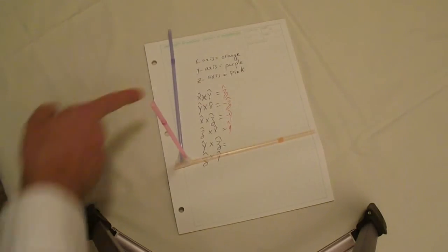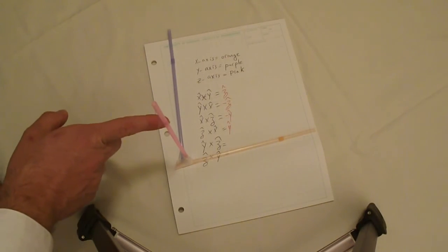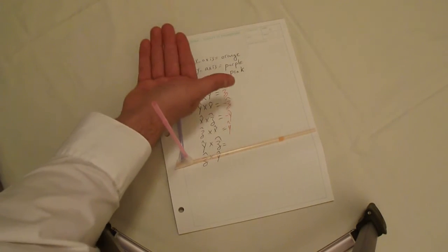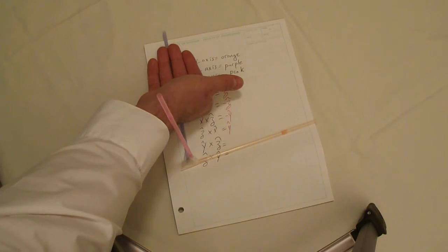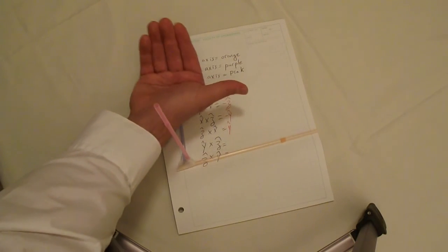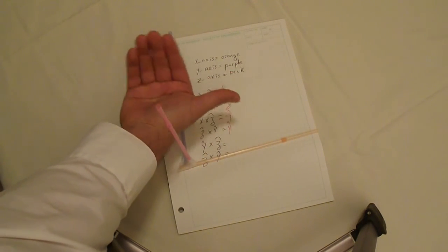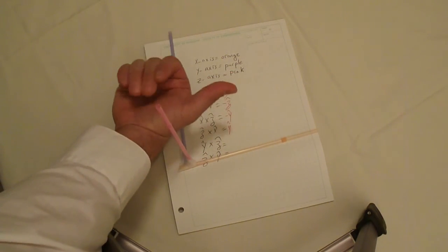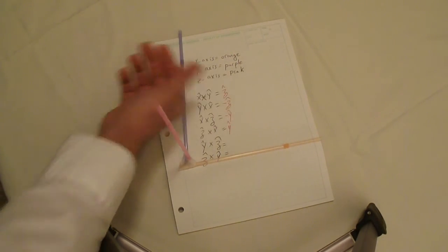Y cross Z: the Y is the purple and the Z is the pink. Lay your right hand adjacent to your Y axis and curl towards Z. You can clearly see that your thumb is pointing in the direction of the orange straw, which is the positive X axis. So Y cross Z equals positive X-hat.